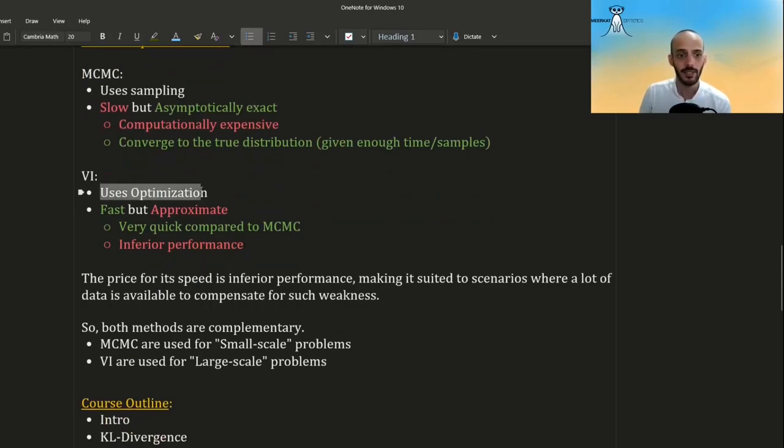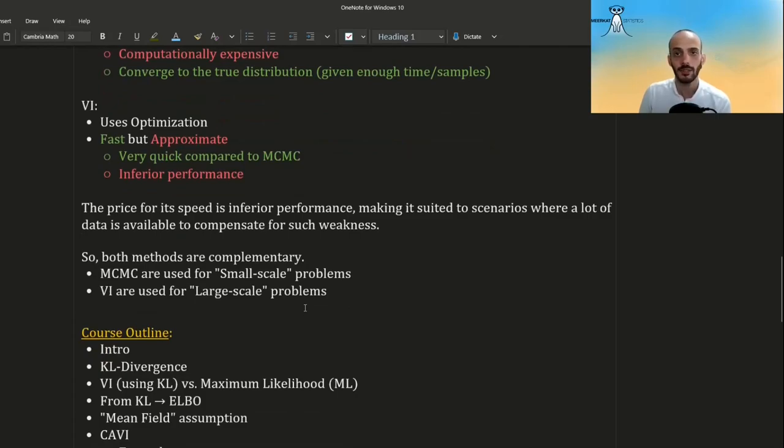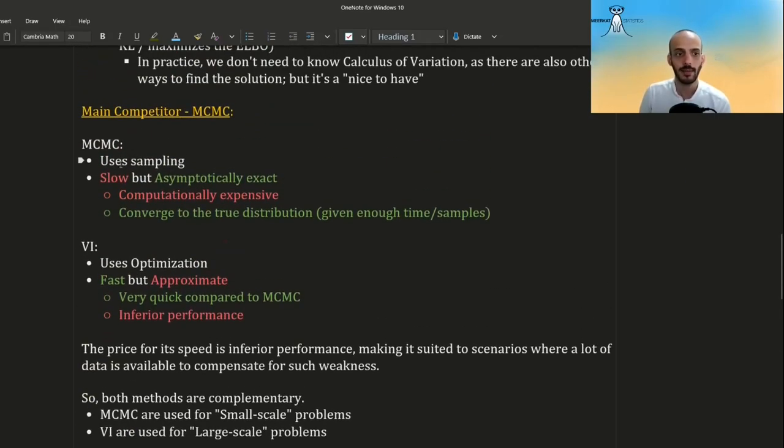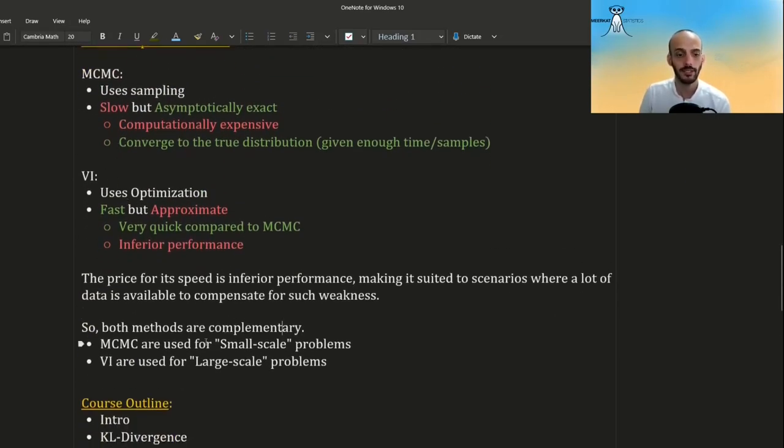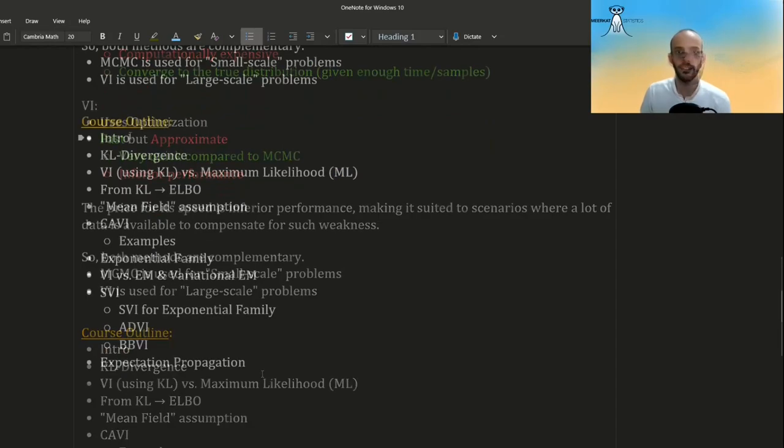VI, on the other hand, uses optimization. It's much faster, but it's only an approximation. It has an inferior performance. So usually we will use it where there is enough data available to compensate for this inferior performance. So we can look at both of these methods, MCMC and VI, as complementary. MCMC is used for small scale problems and VI is used for large scale problems.